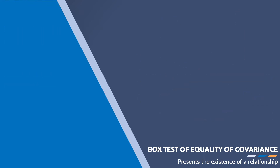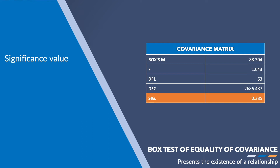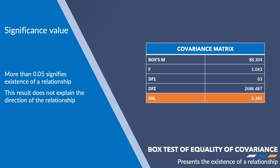This table will have many rows representing different values, but the most relevant one is the significance value, because it shows us the relationship between the variables in your data. If this significance value is more than 0.05, then there exists a relationship between the variables. In this example, the significance value is 0.385, so we can say that yes, there is an impact of the company's promotional activities on its performance. Note that this table does not indicate whether the relationship is direct or inverse, as the Box test shows only the presence of covariance and not its direction.